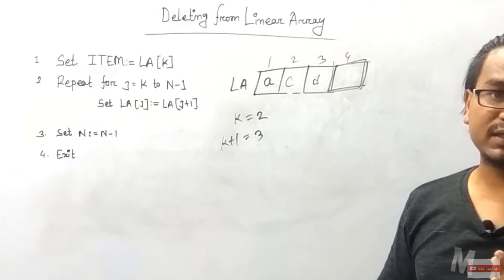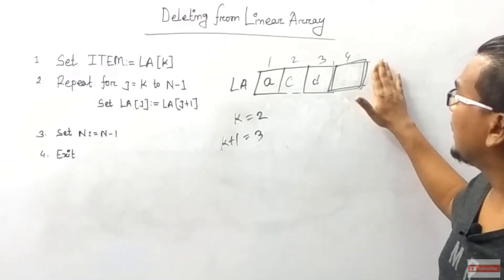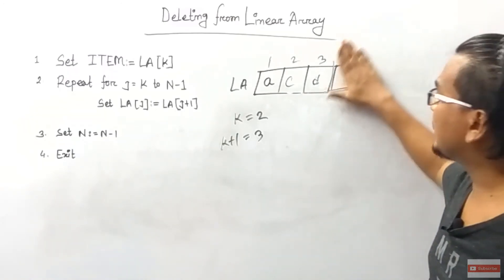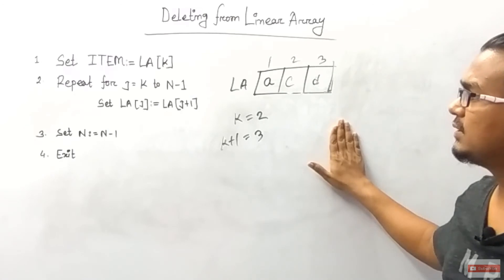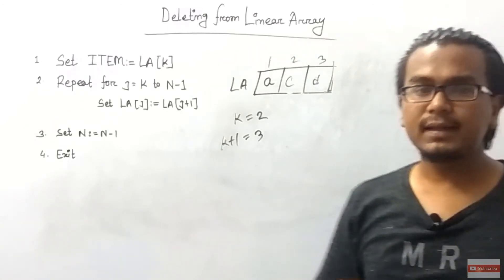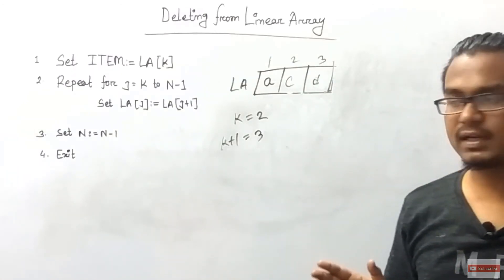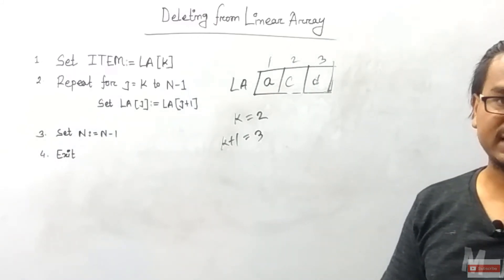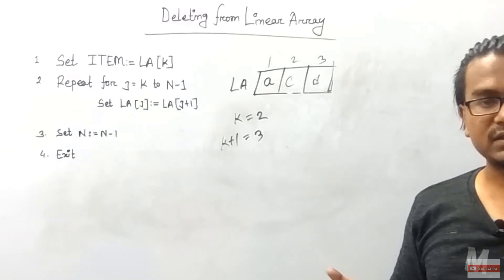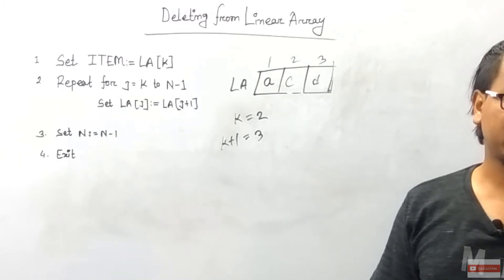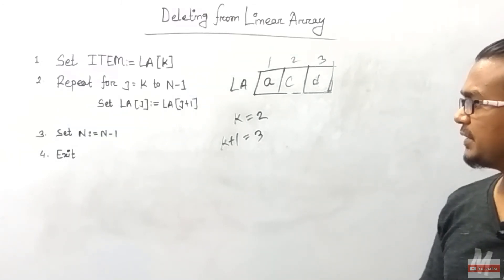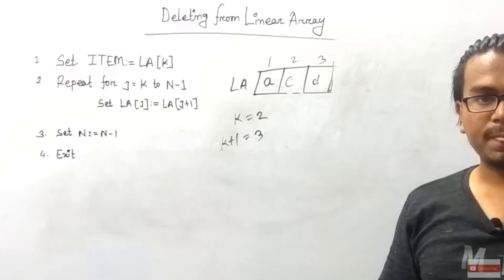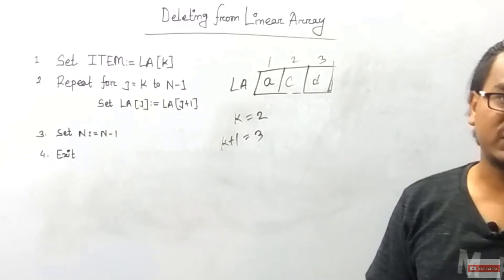So the value of B is the value of B — minus 1 element. That means I had 4 elements, now there are 3 elements. So we have successfully deleted a particular element from the linear array. Now we know how to delete a particular element from a linear array of size n.